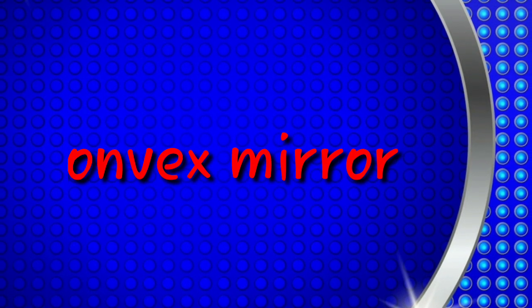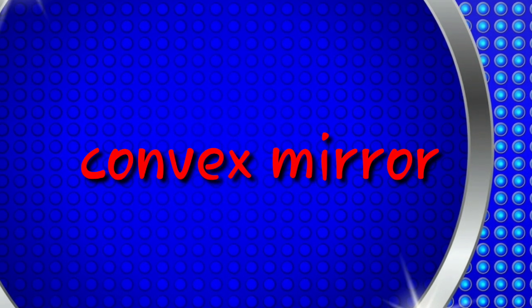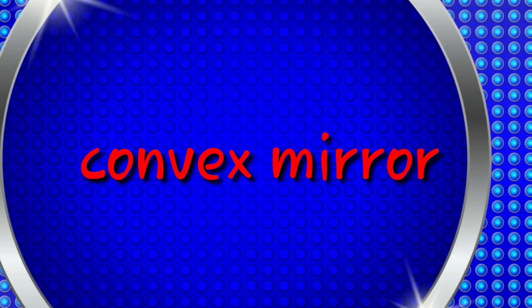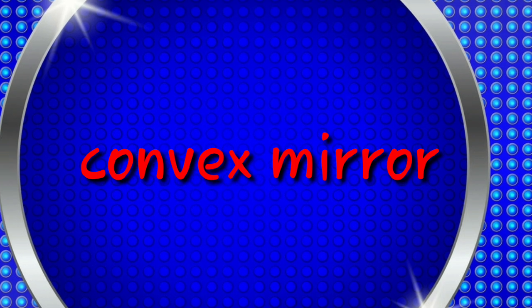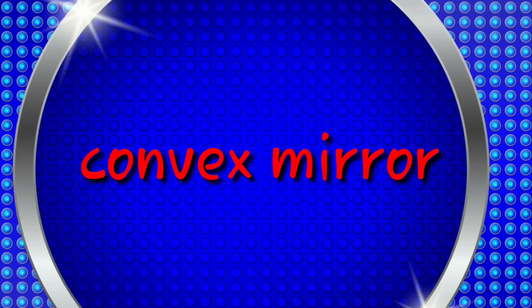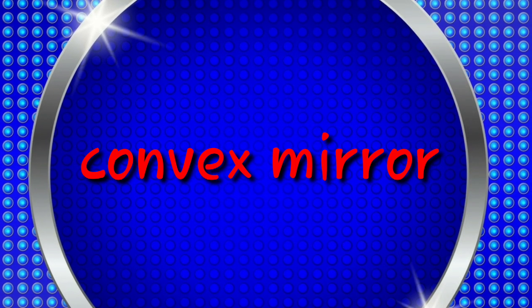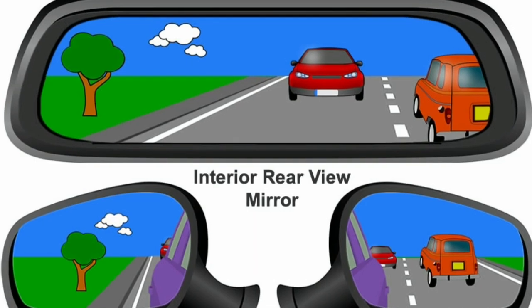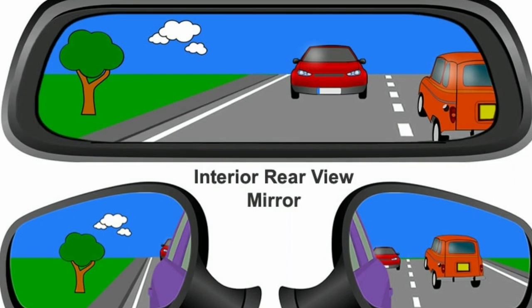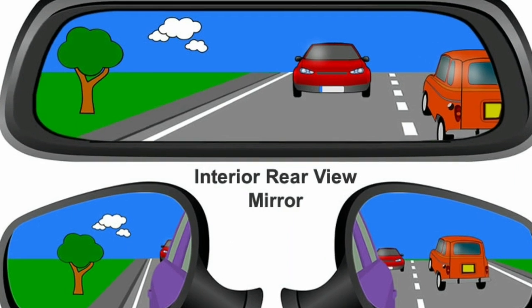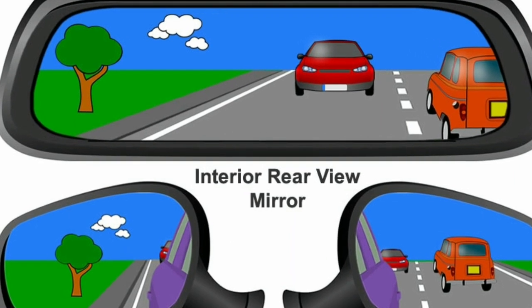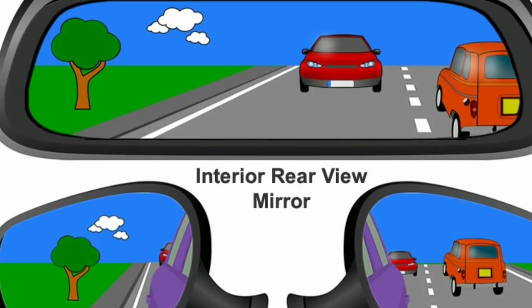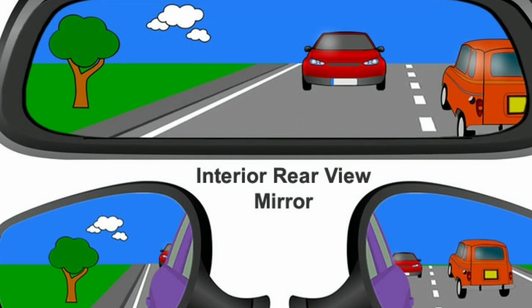Convex mirror — image peculiarity and uses of a convex mirror. The convex mirror is used as a rear-view mirror in vehicles.